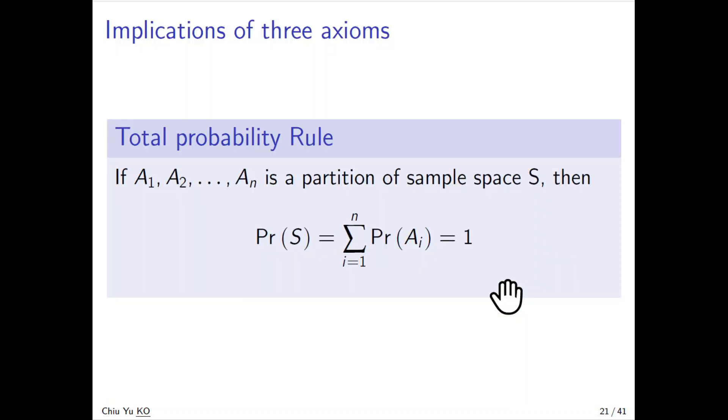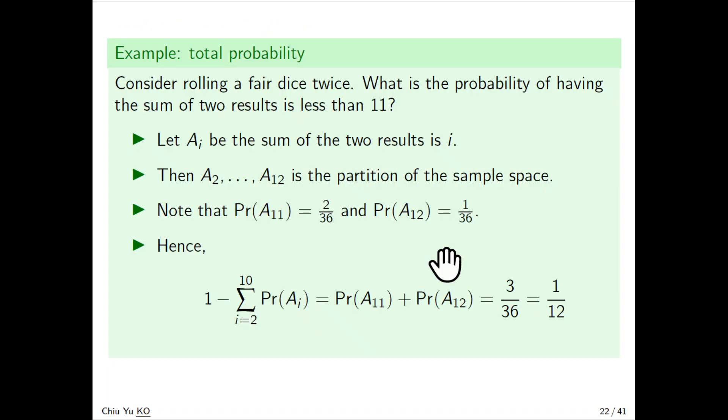So last implication will be the total probability rule, which means if you have A1 to A_n as a partition, then sum of them is 1. For example, suppose we roll the die twice. What's the probability the sum is less than 11? So A1 will be the result is 1, right? And you can have A2 up to A12 - is a partition. Why the partition? Because only one of the sum must be one number, right? So they cannot be - it cannot be number 2 and number 3 at the same time. It's a natural way to divide the sample space.